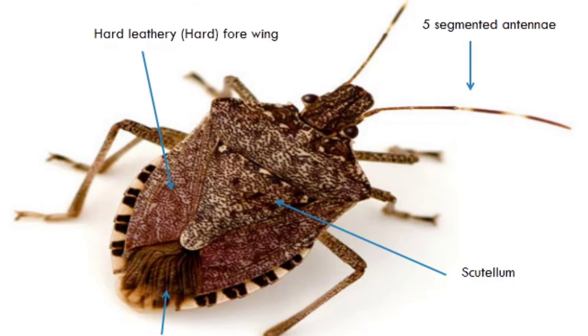In the stink bug, a special triangular-shaped structure called the scutellum is present, and they are attached to the body.